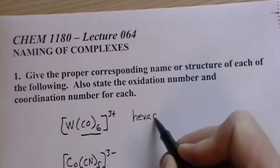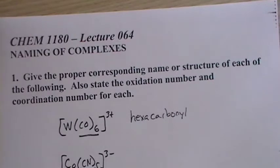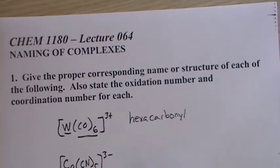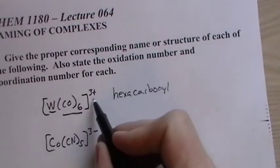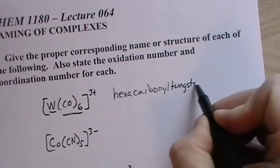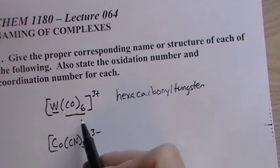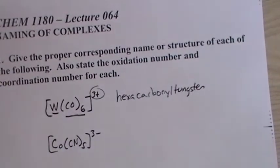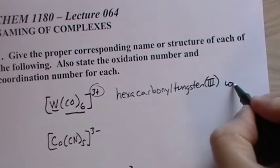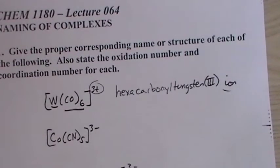So we call it hexacarbonyl. Now we have tungsten here, W, and it's part of the cation, so we leave the name alone. We call it hexacarbonyl tungsten. But then we also need to know its oxidation state. Carbonyls are neutral, so the charge must be the same as the charge on the complex. So this is tungsten(III), and then you need to put ion. Make sure you put ion in there. So hexacarbonyl tungsten(III) ion.